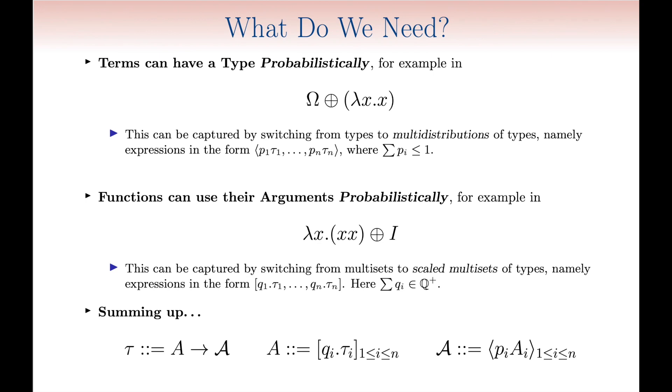Summing up, we need three kinds of types. Arrow types, which map intersection types to type distributions. Intersection types themselves, namely scaled multisets of types. And type distributions, namely multidistributions of intersection types.